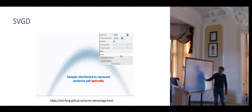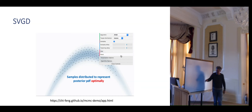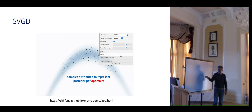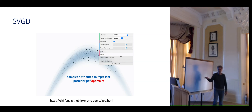The vectors show the gradient directions for the cloud to redistribute. You can see all the particles self-organizing as they move to represent the posterior. This is not random sampling — this is optimal sampling, which is a totally different game.